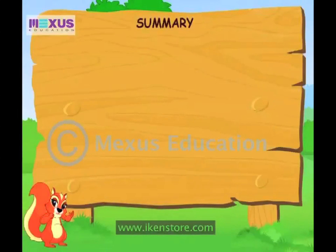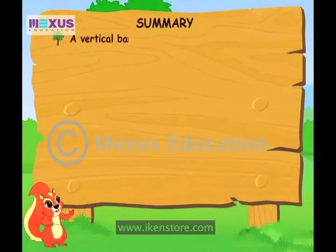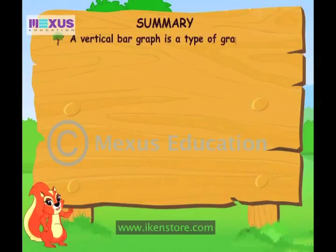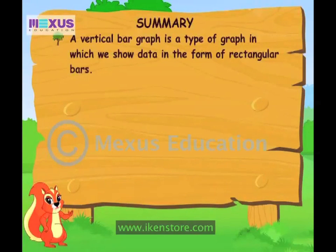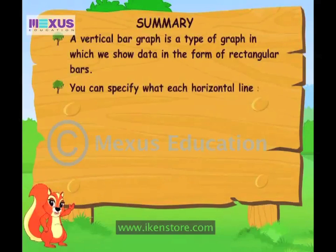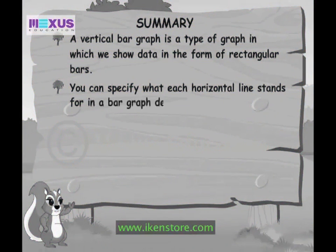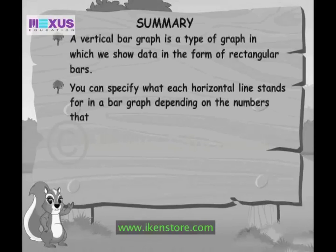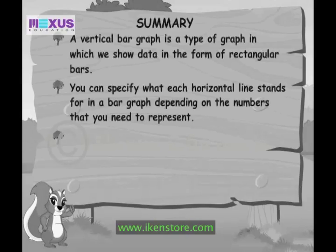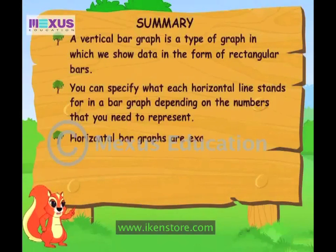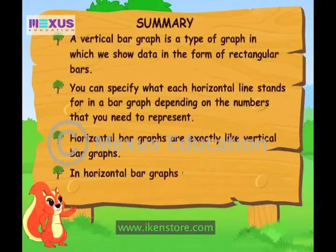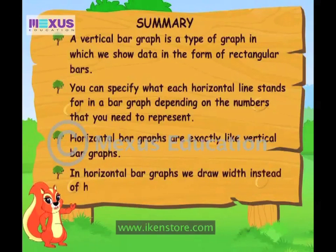Let's revise all that we have learned about bar graphs. A vertical bar graph is a type of graph in which we show data in the form of rectangular bars. You can specify what each horizontal line stands for in a bar graph, depending on the numbers that you need to represent. Horizontal bar graphs are exactly like vertical bar graphs — in horizontal bar graphs, we draw width instead of height.